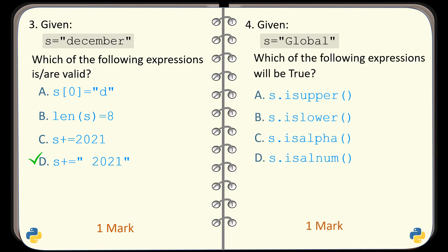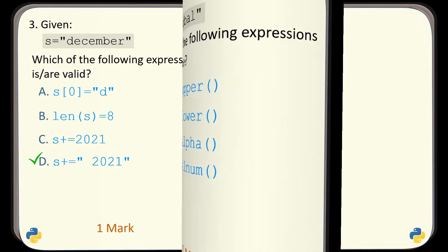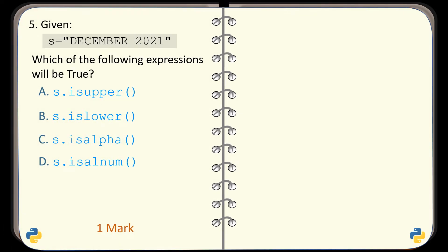Question number 4. For the given string S, which of the given expressions will evaluate to true? The answer is option A, because all the alphabets used in this string are uppercase alphabets.